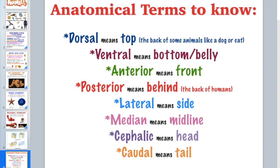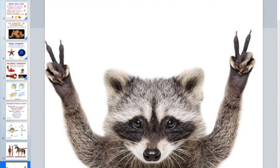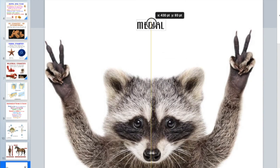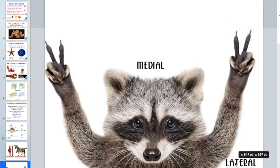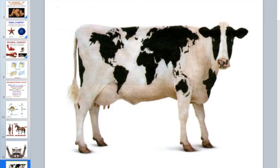Lateral means side — your arms are lateral to your belly button. Medial, or median, means midline — going right between your eyes, through your nose and belly button. Here's a raccoon: the medial point runs right down the center, and lateral refers to the sides of the raccoon.